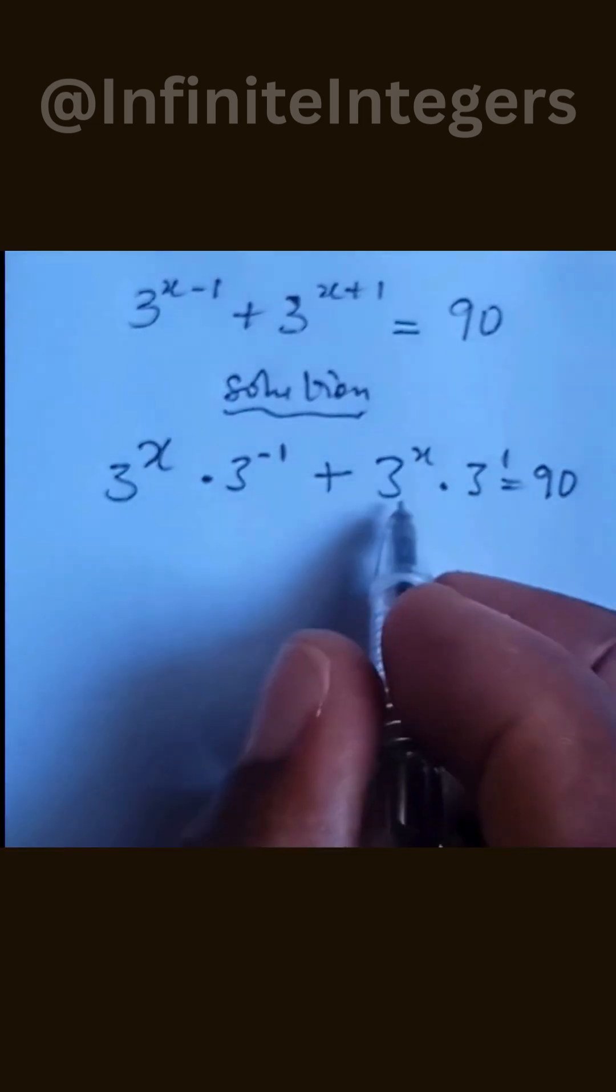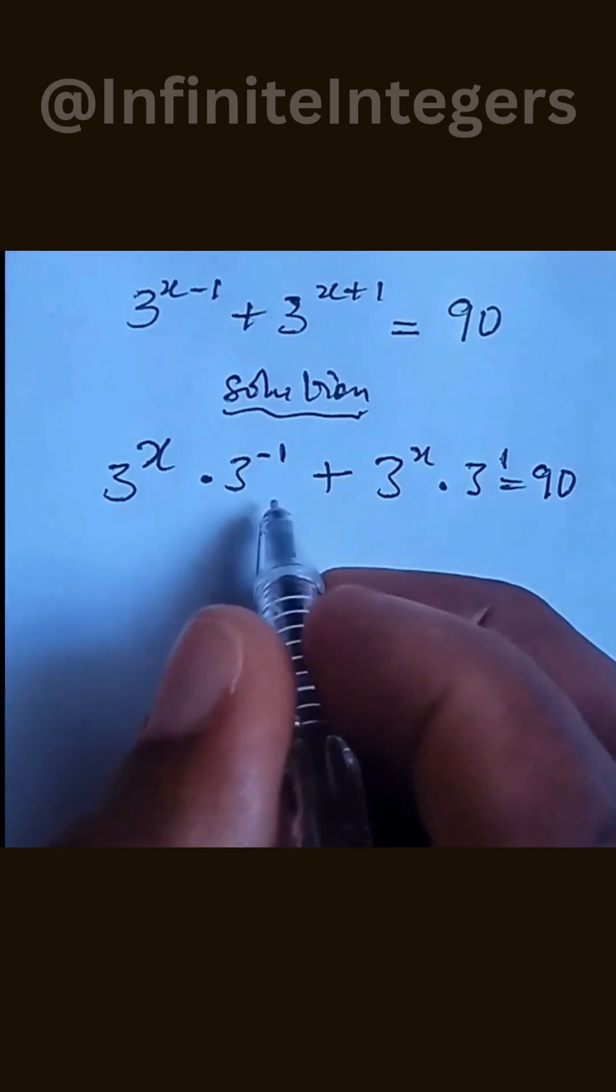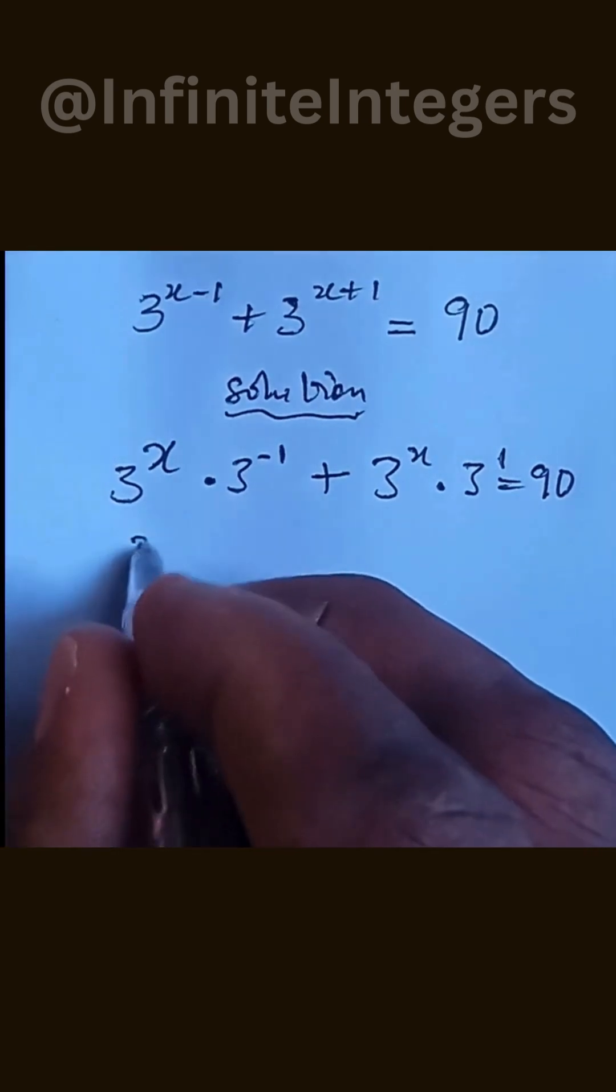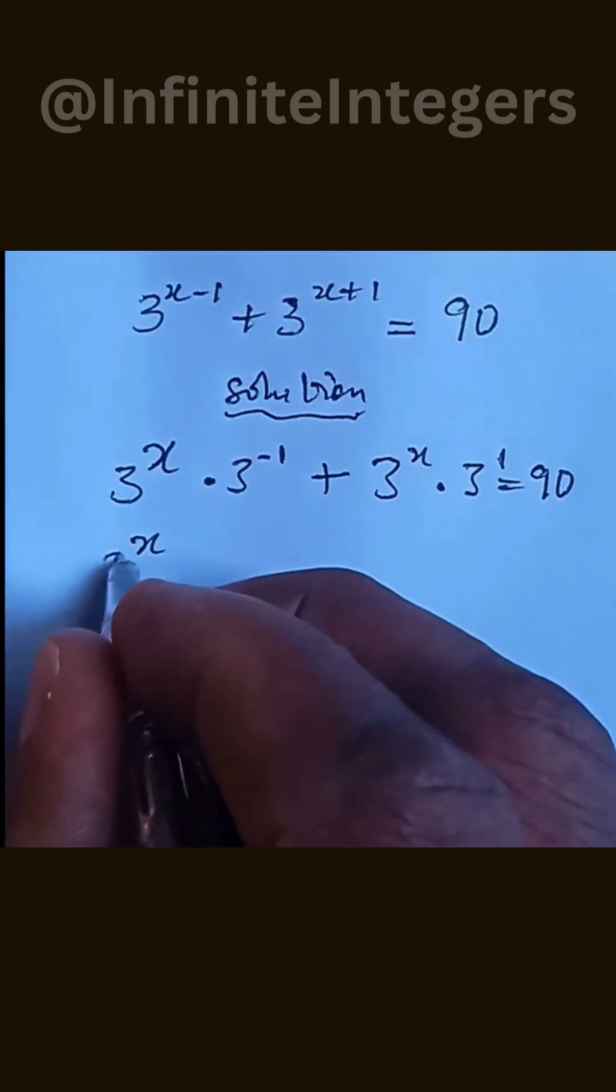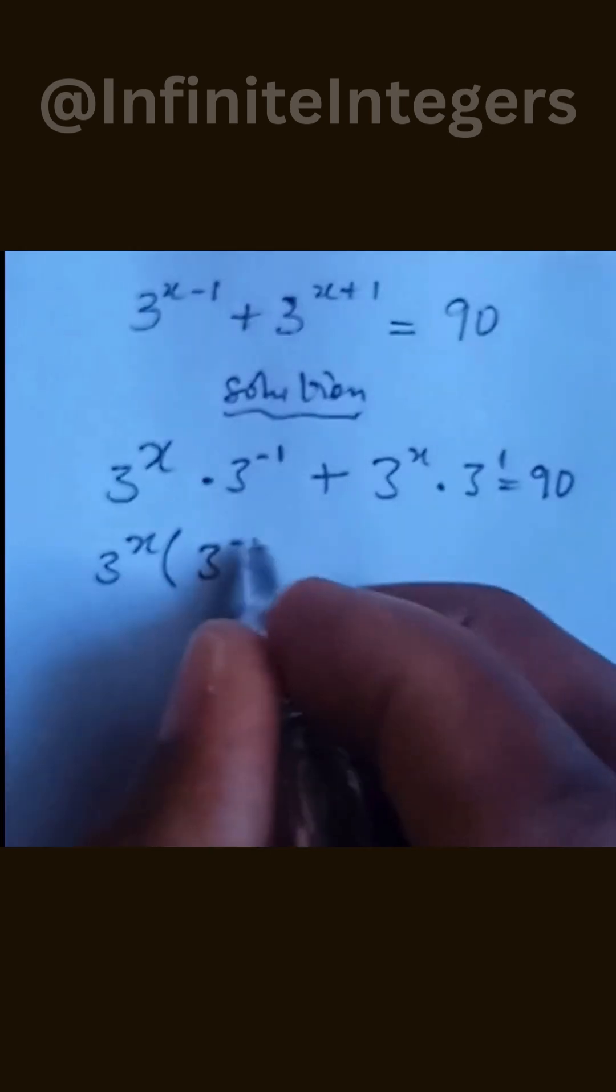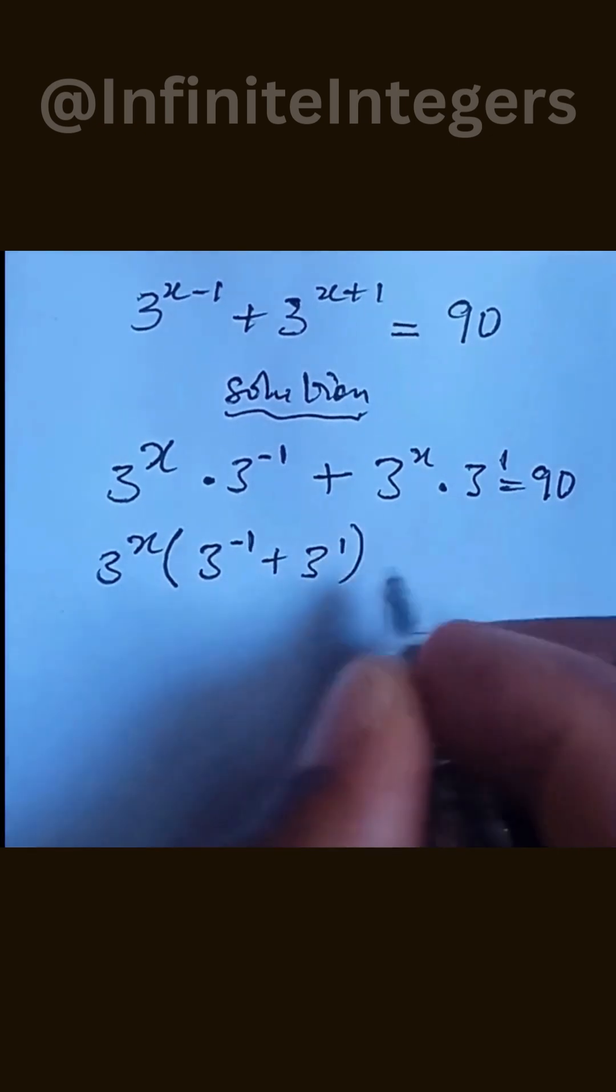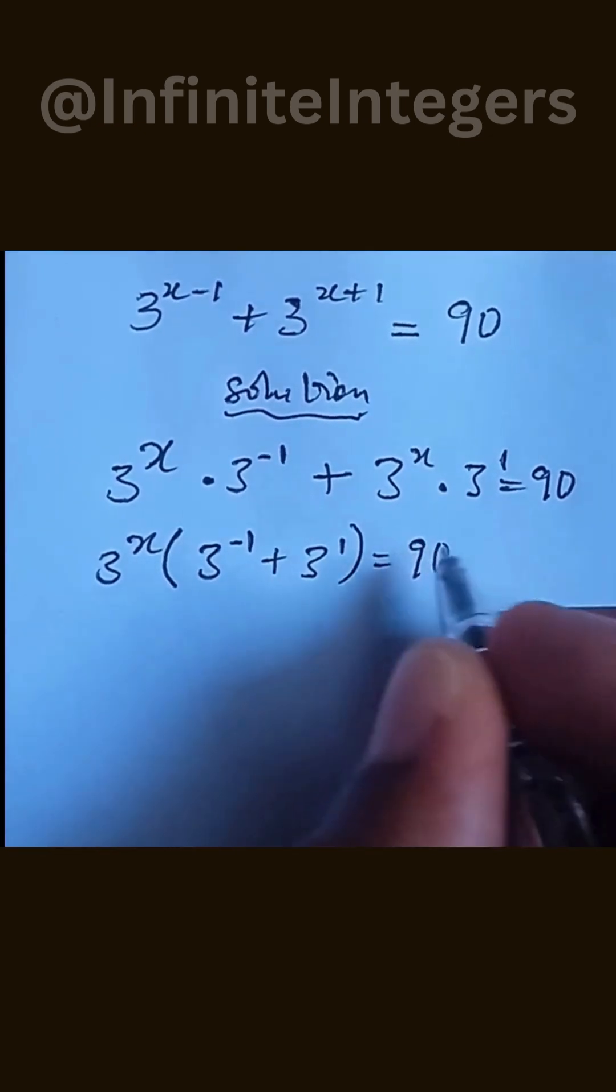Then we factor out 3 to the power of x from this left hand side, so we have 3 to the power of x into bracket 3 to the power of minus 1, then plus 3 to the power of 1, equal to 90.